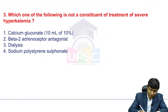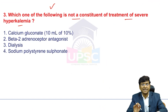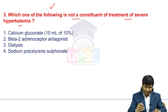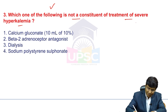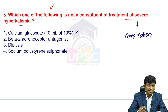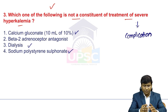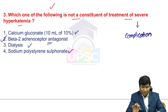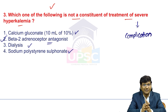Third question: which of the following is NOT a constituent of treatment of severe hyperkalemia? Options are calcium gluconate, beta-2 adrenoreceptor antagonist, dialysis, and sodium polystyrene sulfonate. Hyperkalemia is a complication in chronic renal failure because potassium is not excreted. Calcium gluconate is given, dialysis in refractory cases, and sodium polystyrene sulfonate — but beta-2 adrenoreceptor antagonist is NOT given. What we give is the beta-2 agonist.